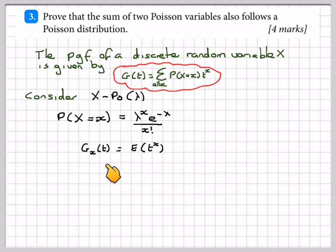g_X(t) equals E(t^X), which is what this is. So this is from x equals 0 to infinity of t to the x times lambda to the x times e to the minus lambda over x factorial.